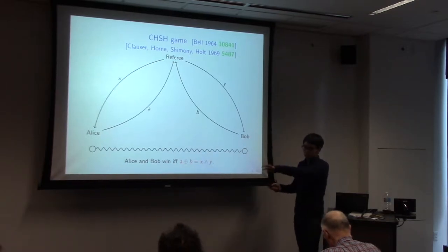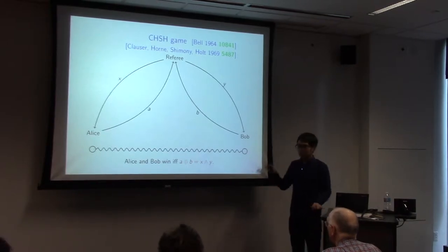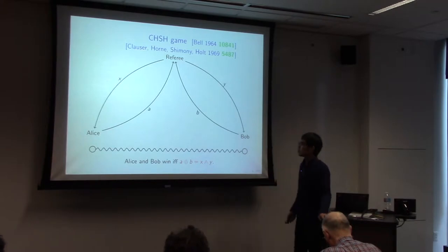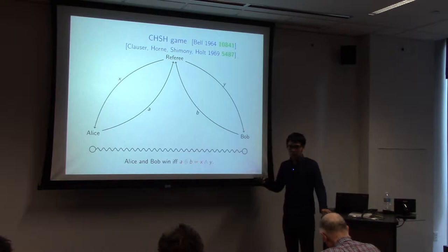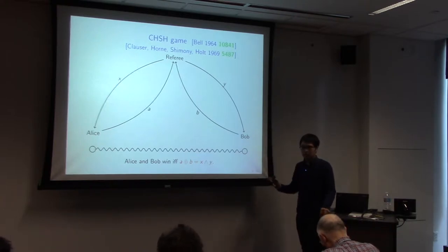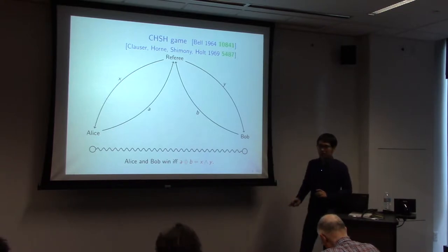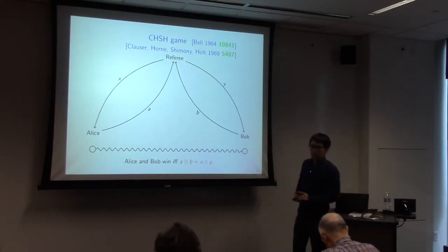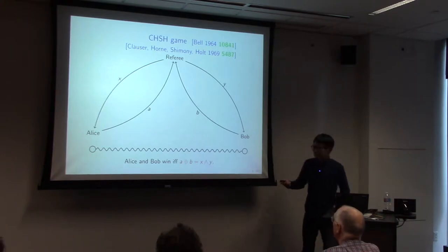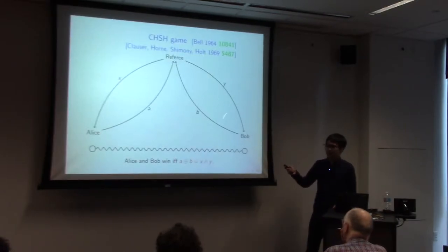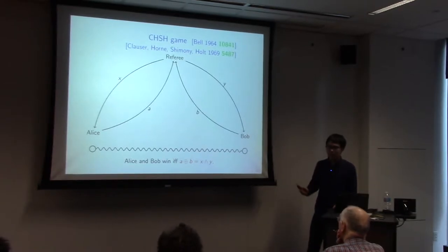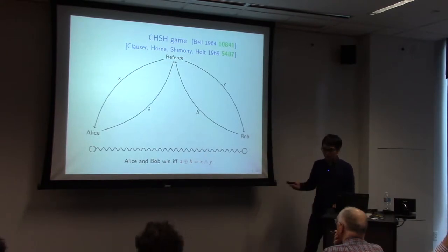In the quantum setting, they can use a shared quantum state. But first, let's consider the classical case. They can use shared random bits, and X and Y are given uniformly — 00, 01, 10, 11 each with probability one quarter. What is the largest winning probability of this game? Three quarters. If X and Y are uniform, the right-hand side is 1 with probability one quarter. So if both A and B are 0, they win with probability three quarters, and in fact this is the maximum.